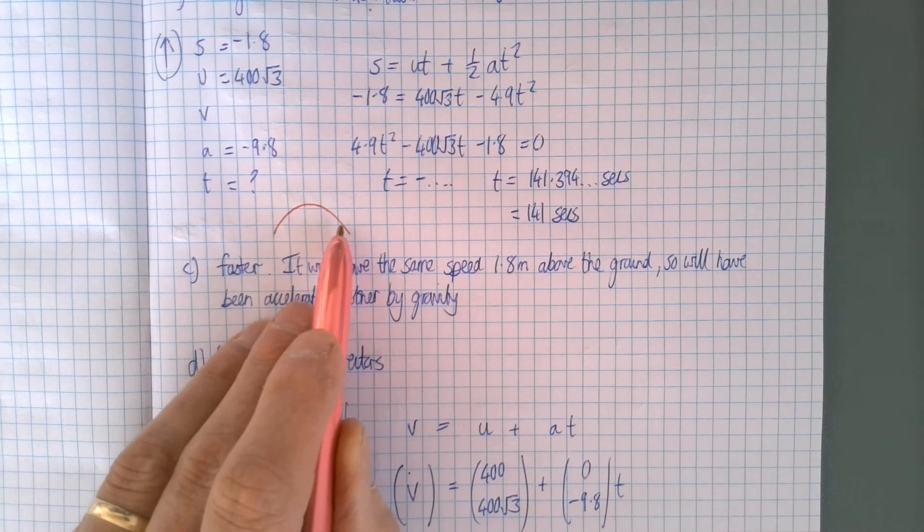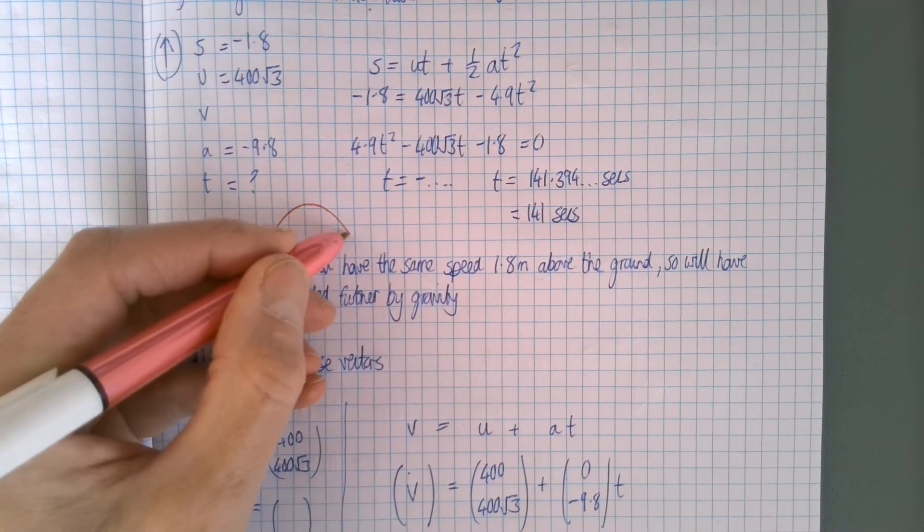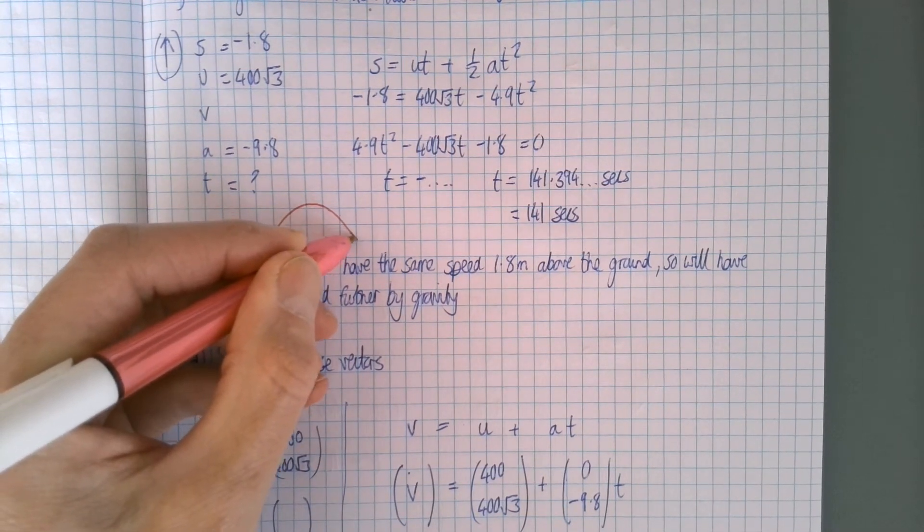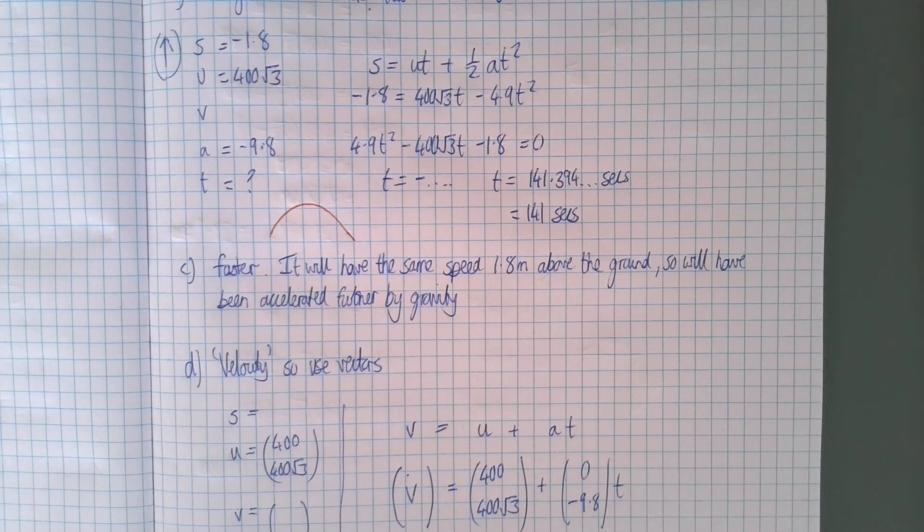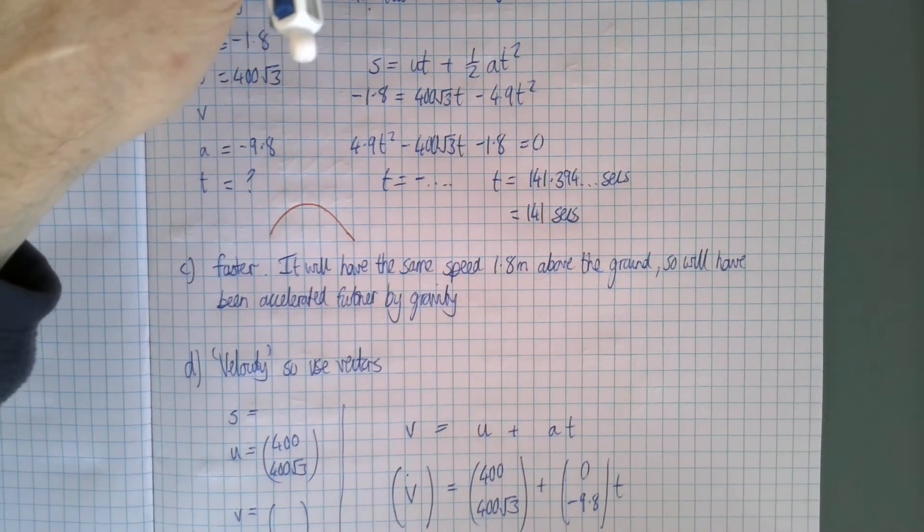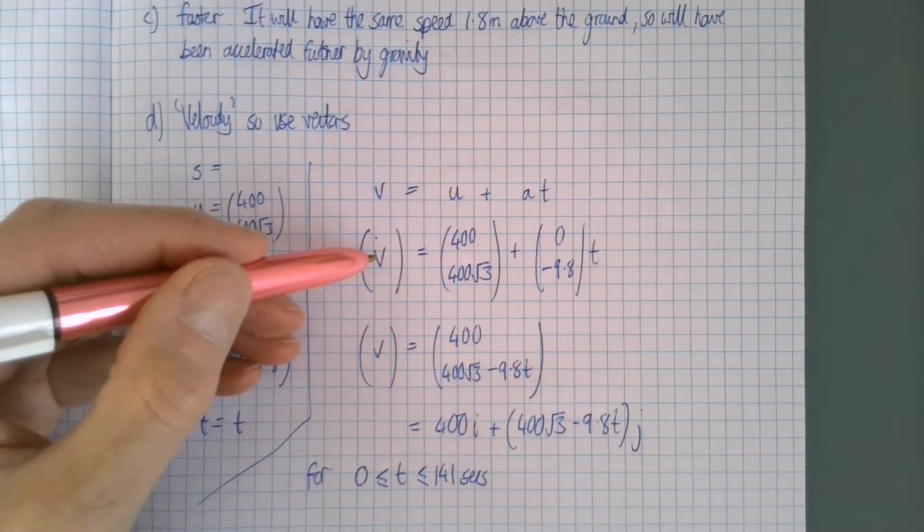Although of course vertically that will be coming down rather than going up. So the extra 1.8 meters it will have accelerated a little bit more by gravity. Part d wants the velocity of the bullet at time t, so the use of the word velocity means we need both components. We could do it separately or we could do it in terms of vectors, which is what I did.